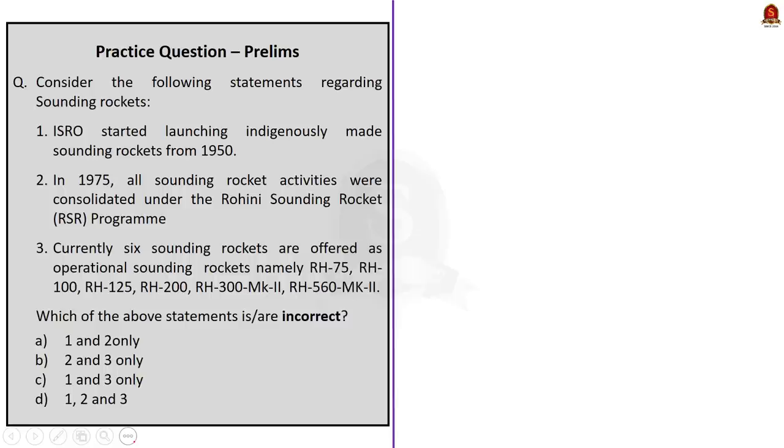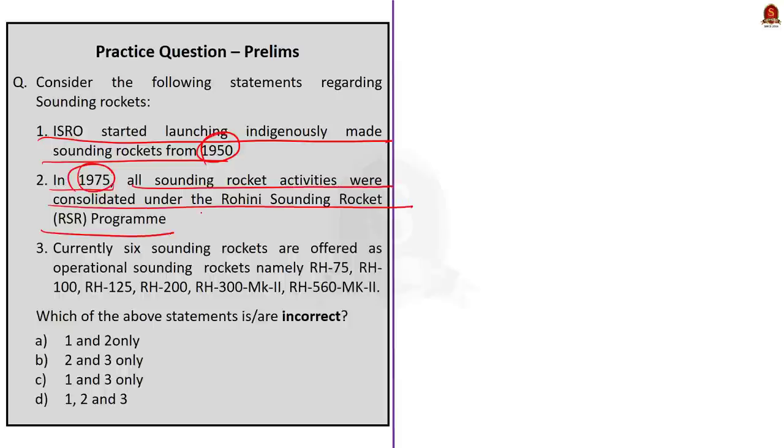Now look at the second question. Consider the following statements regarding sounding rockets. Statement 1. ISRO started launching indigenously made sounding rockets from 1950. Statement 2. In 1975 all sounding rocket activities were consolidated under the Rohini sounding rockets RSR program. And statement 3. Currently 6 sounding rockets are offered as operational sounding rockets, namely RH 75, RH 100, RH 125, RH 200, RH 300 MK2 and RH 560 MK2. So here you have to find the incorrect statements.